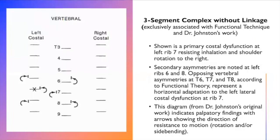This is another diagram from Dr. Johnston's original work. This is what he calls a three segment complex without linkage. Again, that term linkage is something specific to functional technique in Dr. Johnston's work. What he's showing here is he's showing a primary costal dysfunction at left rib seven, that's resisting inhalation and shoulder rotation to the right. There are secondary asymmetries that are noted at the left ribs six and seven. There are mirror images above and below. There's an opposing vertebral asymmetry at T6, seven and eight. According to functional theory, this represents a horizontal adaptation to the left lateral costal dysfunction at rib seven.